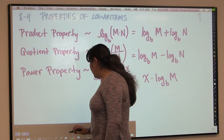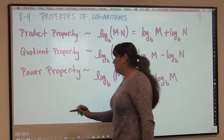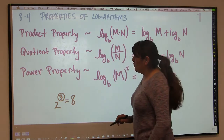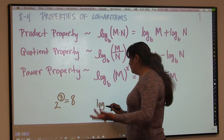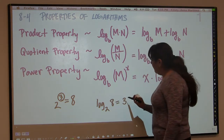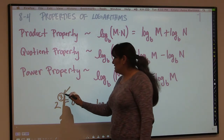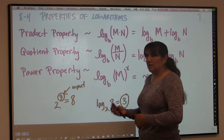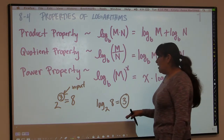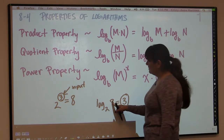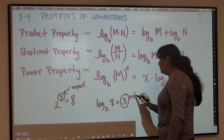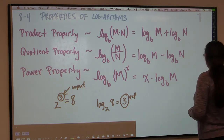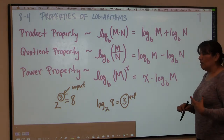When you look at something in exponential form — for example, 2 to the third power equals 8 — the exponent is 3. The inverse of that would be log base 2 of 8 equals 3. In the exponential form the exponent is the input and 8 is what comes out, but in the logarithmic case what goes in is the 8 and what comes out is the exponent. So a logarithm is an exponent, and these properties should make sense when you think about the properties of exponents.